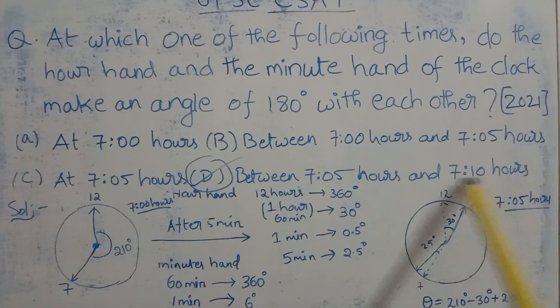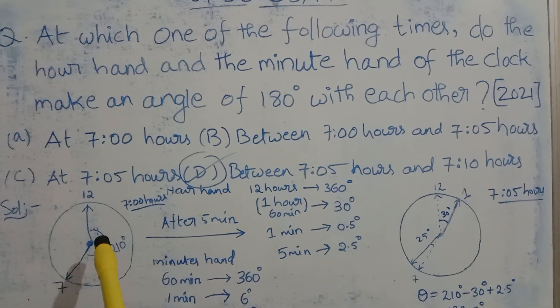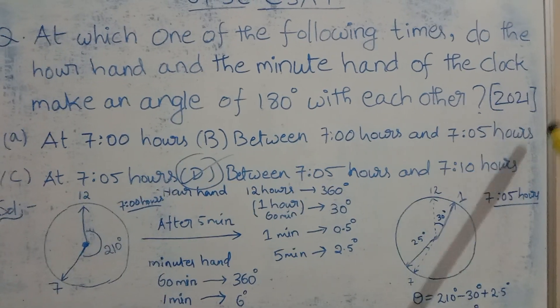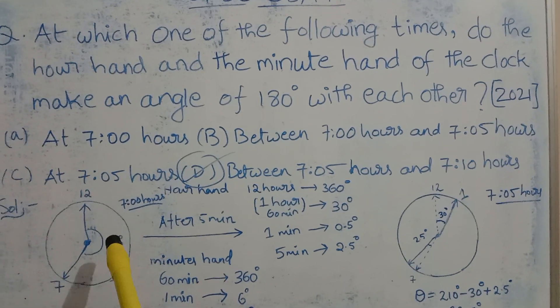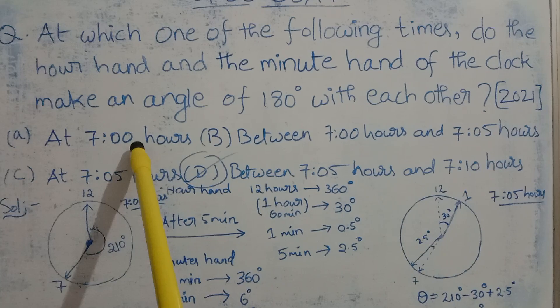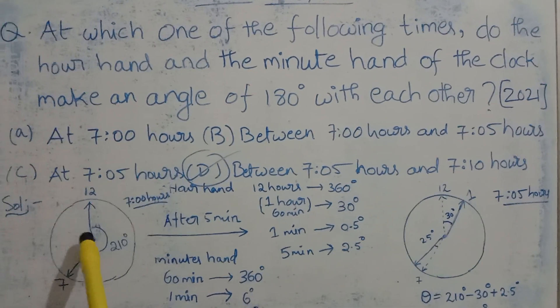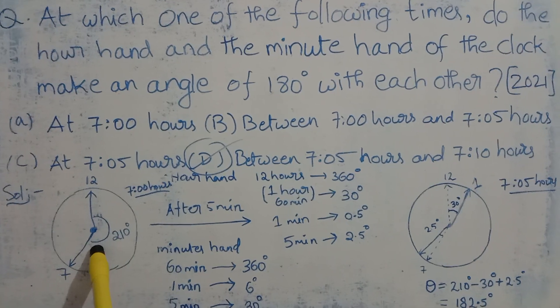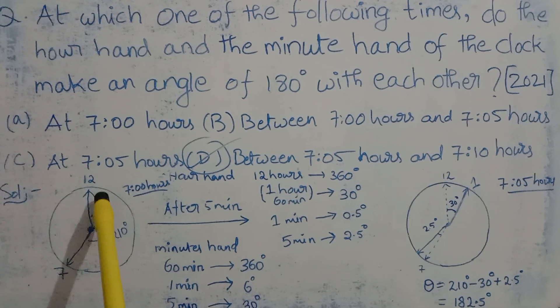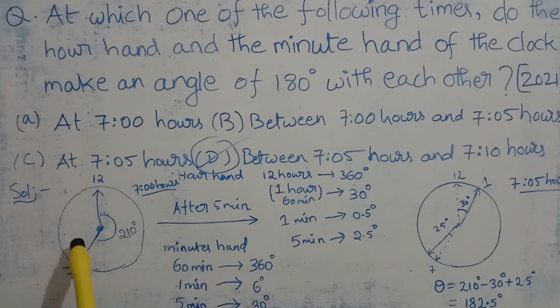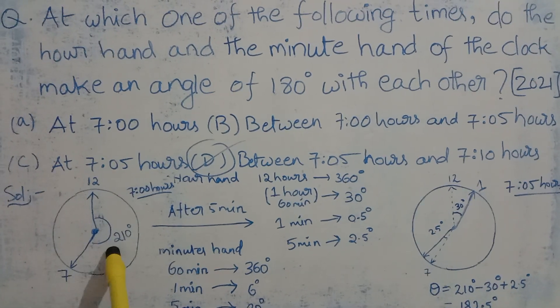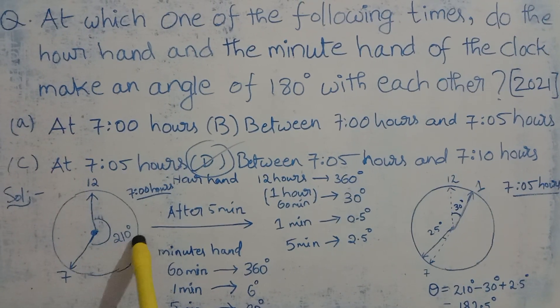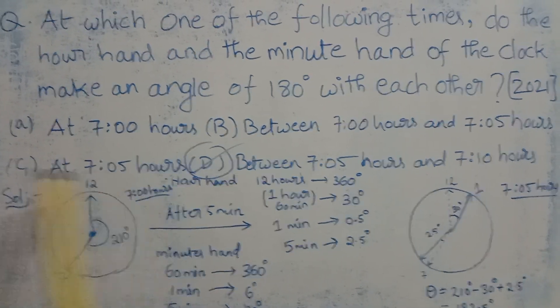If you see the options, let's consider the angle at 7:00 hours. We know the angle between the minute hand and the hour hand is 210 degrees at 7:00 hours.